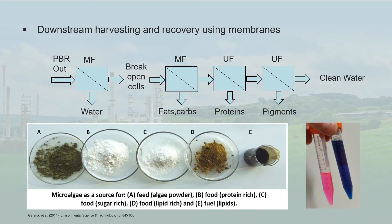This is a very important concept — a biorefinery. Looking at the box diagram in the middle, the PBR outlet is from our photobioreactor. The first step in the downstream process is to remove much of the water, because algae grow quite dilute — typically around 2 to 3 grams per litre in our closed photobioreactor systems. If you're going to harvest internal materials from the algae, you need to break the cells open. Our downstream process is based around membranes: a microfilter to harvest fats and carbohydrates, then ultrafiltration to harvest proteins and pigments from inside the algae.